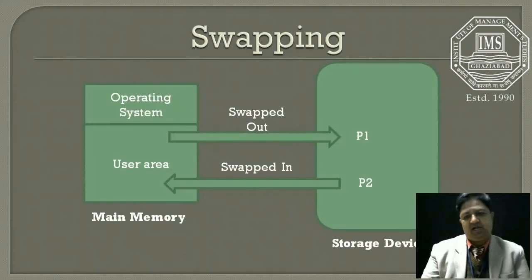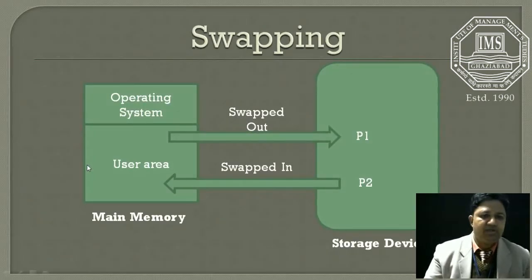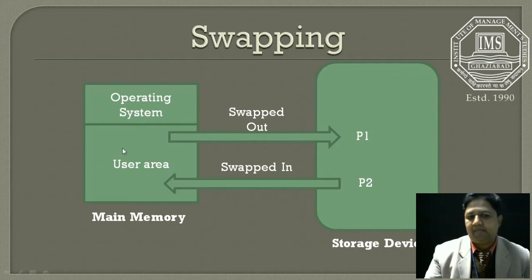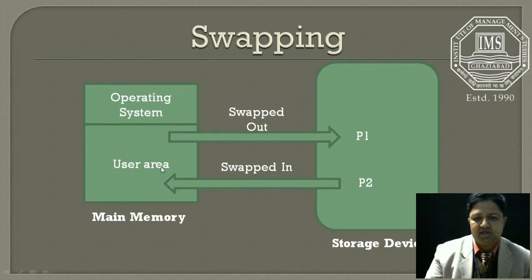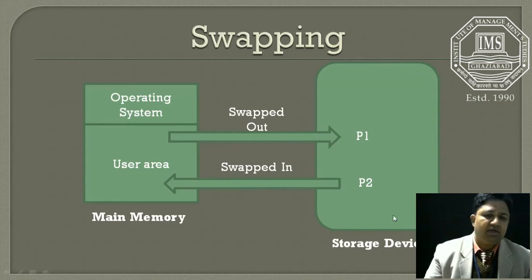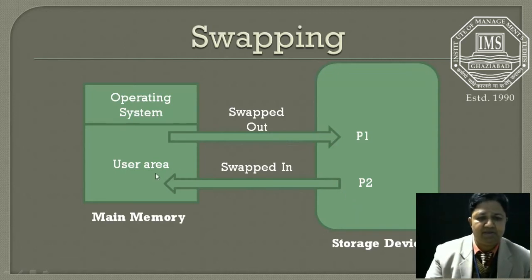We can understand this with the help of a figure. Main memory is divided into two main parts: number one is called the operating system, and number two is called the user space area or user process area. A process is swapped out from the user process area to the storage device whenever it needs any input/output device, and then it can be swapped in from secondary storage back to the user process area when it has completed its work.